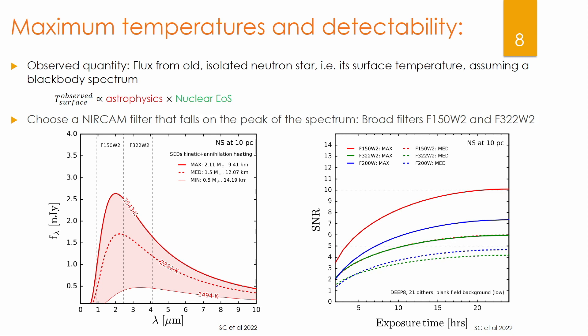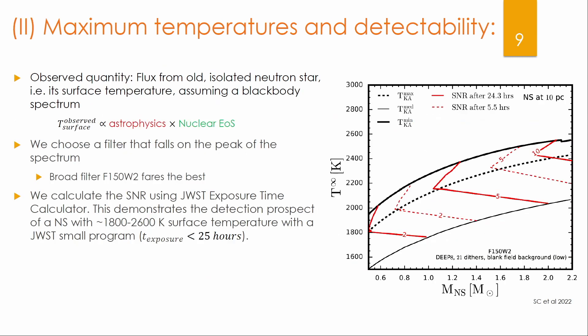We assume that the neutron star sits at 10 parsec. On the final summary plot, the x-axis is neutron star mass and the y-axis is the surface temperature as observed on Earth by the JWST. The two lines show the maximum and minimum temperature obtained by accounting for all previously mentioned uncertainties. The red contours show the signal-to-noise ratio — solid lines show the SNR after 24.3 hours of data taking — and everything to the right of this solid line will have an SNR greater than 10. The takeaway is that the maximum-to-minimum temperature uncertainty has a spread of 40%, and the heaviest, densest neutron stars can actually be seen at 10 parsec with a significant signal-to-noise ratio at the James Webb Space Telescope.